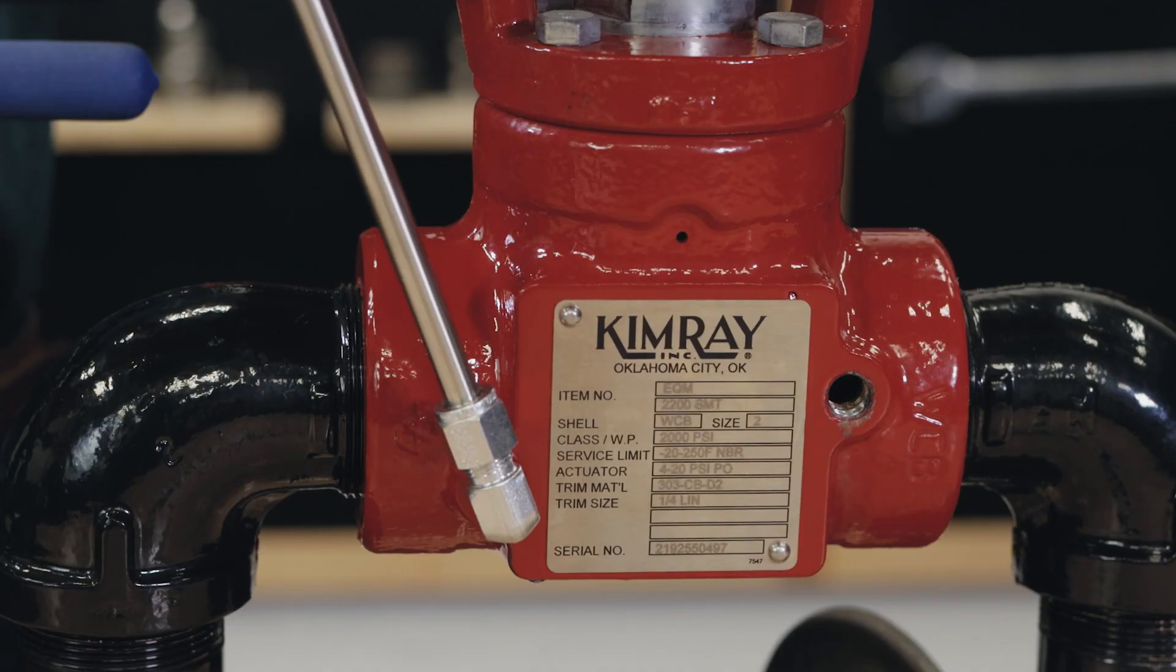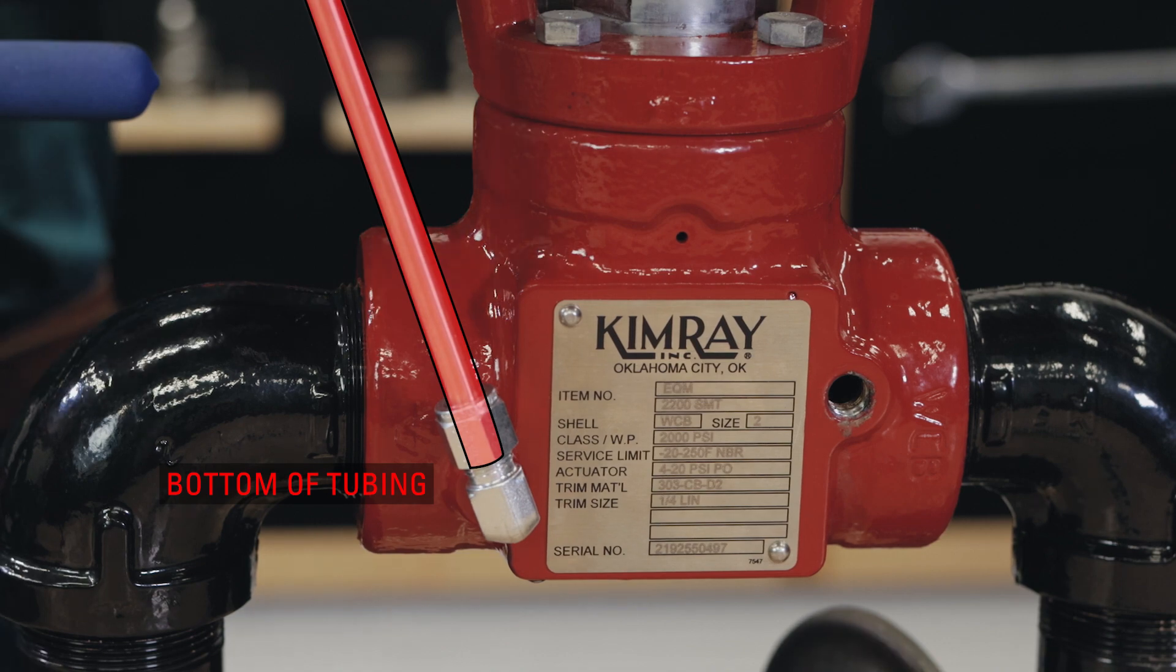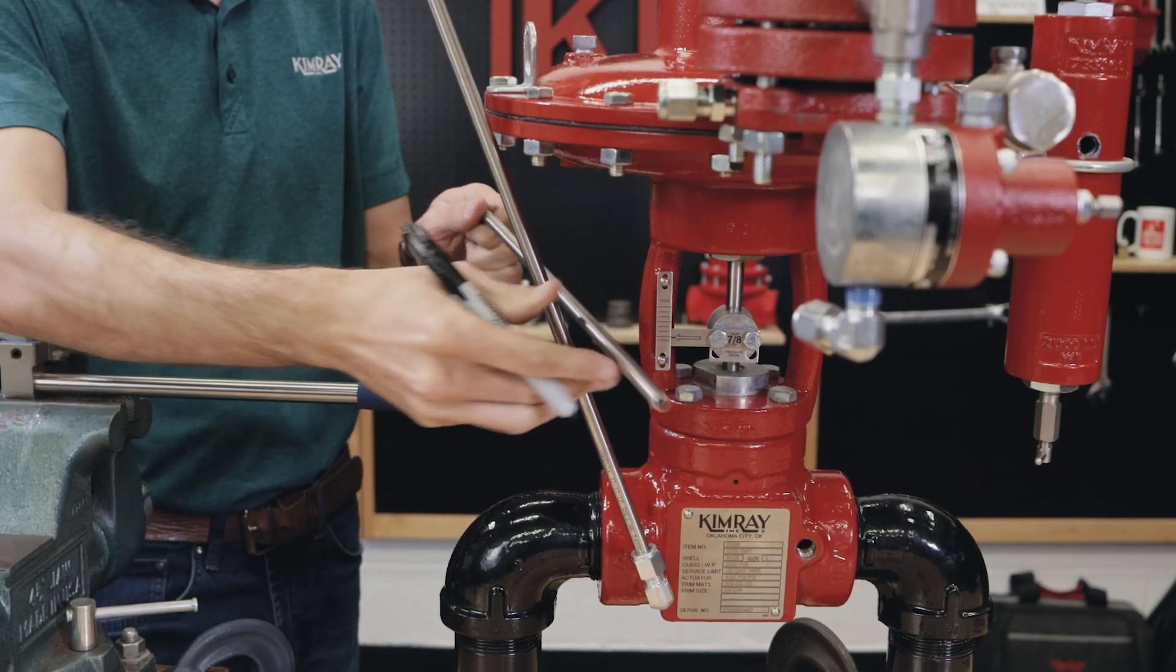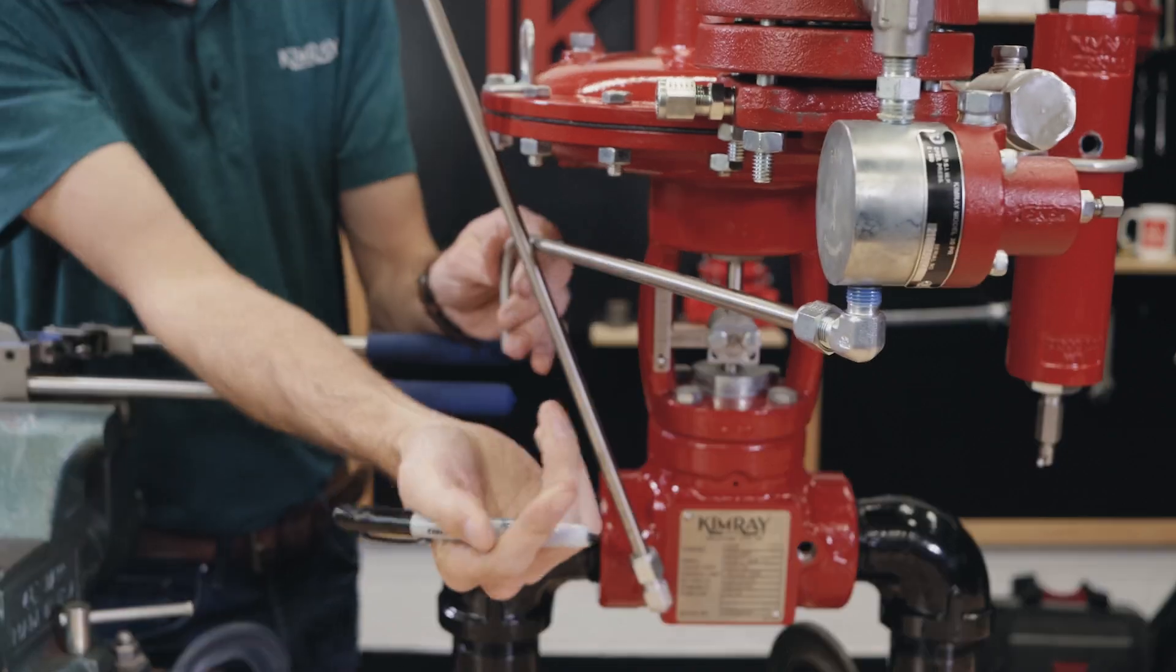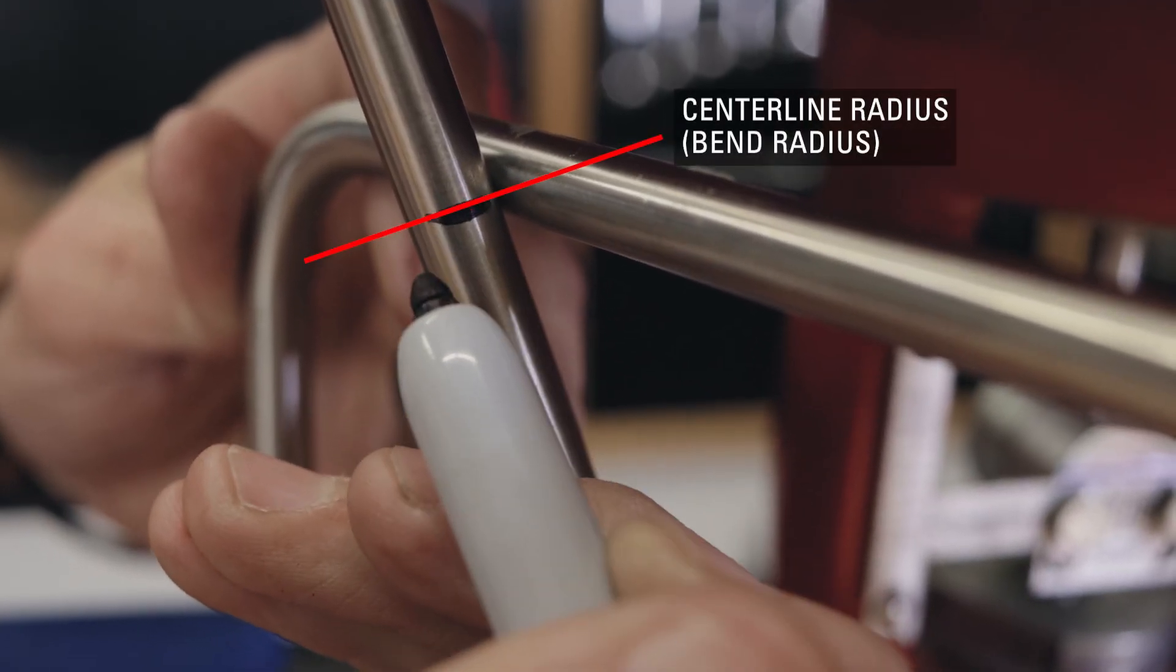The first measurement will be taken from where the tubing touches the bottom of the nut to the center of where the bend will be. I'm going to use a piece of scrap tubing to get an estimate of where this bend needs to be. Then measure and mark where we'll make the 90 degree bend.